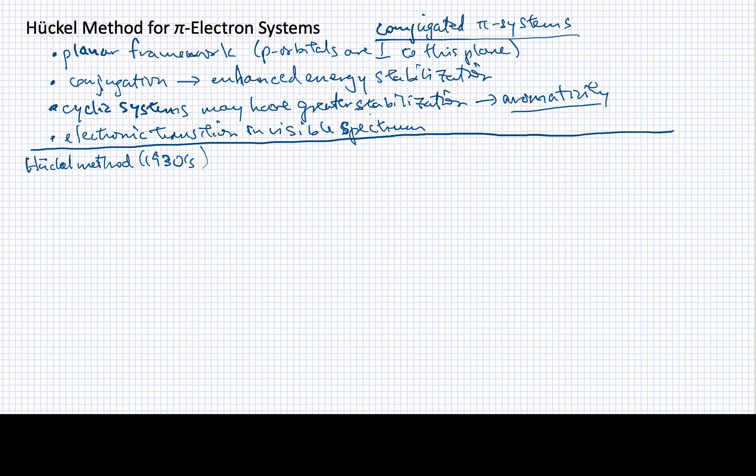So, in other words, focus on the pi system and do that with the quantum mechanical treatment. In some sense, we're going to treat the sigma MOs empirically, and the pi MOs will treat semi-empirically or quantum mechanically. So, that's how he would divide these systems up.